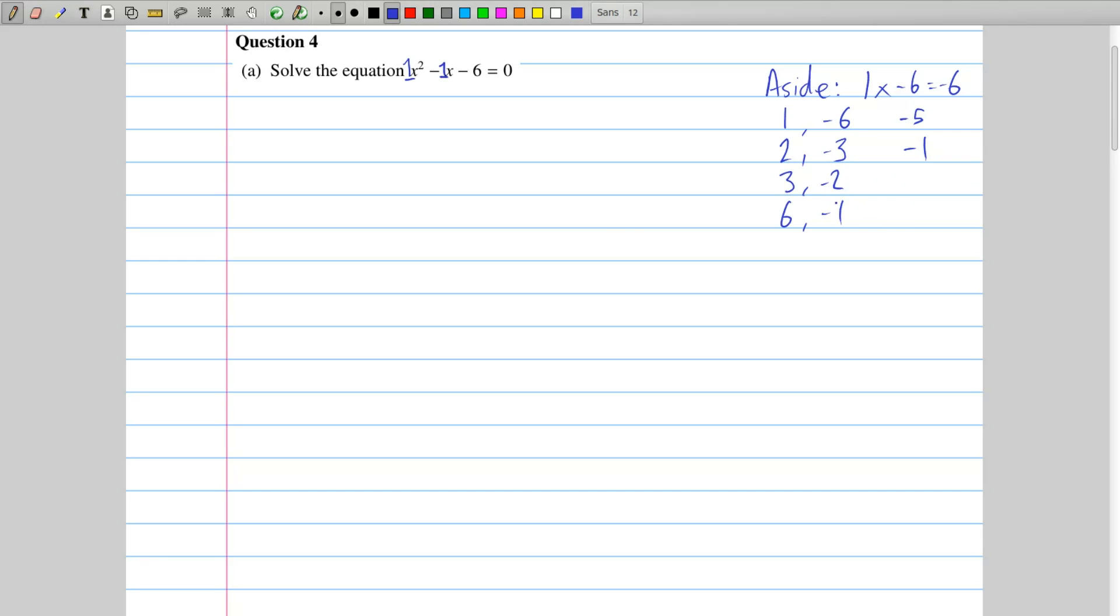Just for the sake of it, let's continue. We have a 3 and a minus 2 gives me a 1, and a 6 and a minus 1 gives me a 5. So I'm looking for the factor pair that adds to a minus 1. And so here's the factor pair, 2 and minus 3. If you add those together, you get minus 1.